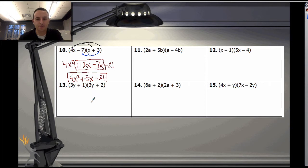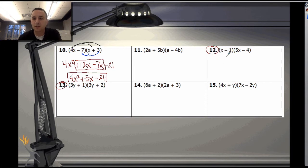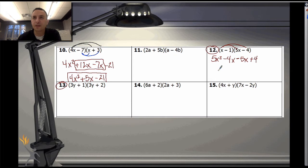Let's take a look at number 12. This time my coefficient is on the second term, but it doesn't change anything. x times 5x is 5x squared; x times negative 4 is negative 4x; negative 1 times 5x is negative 5x; and negative 1 times negative 4 is positive 4. Combining: negative 4 and negative 5 is negative 9x. Final answer: 5x squared minus 9x plus 4.